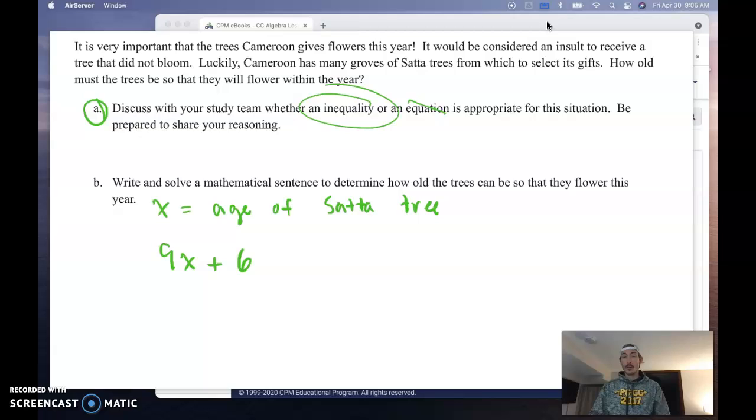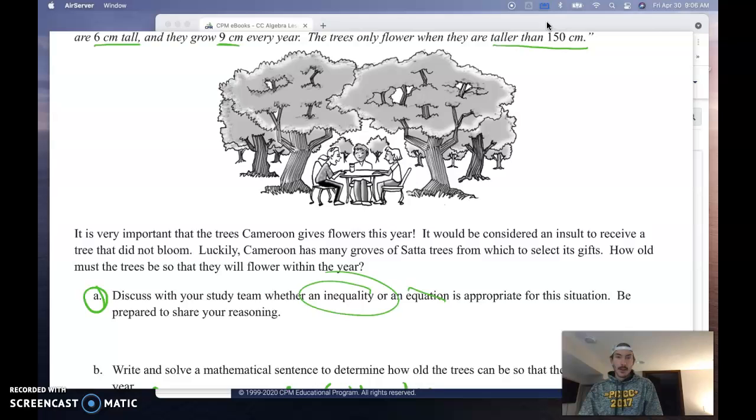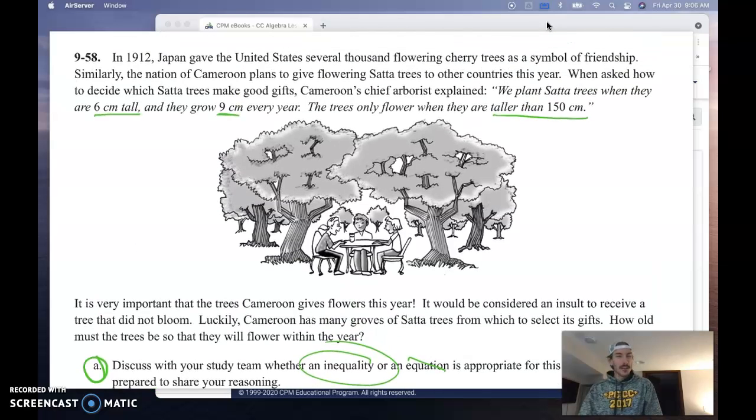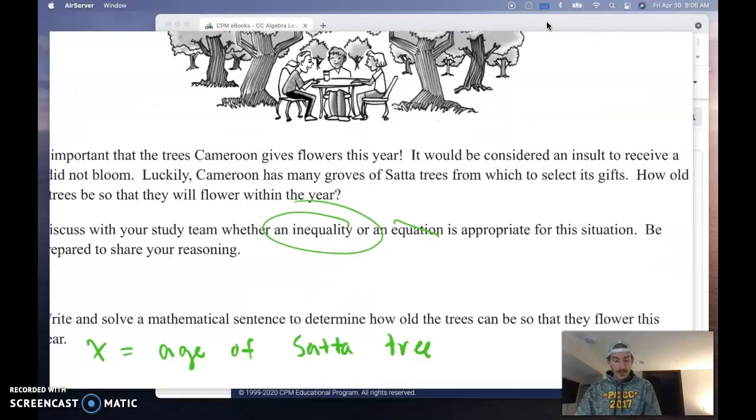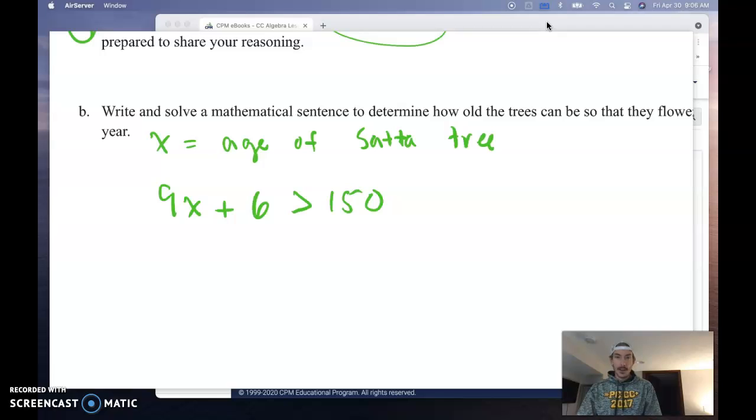And we want that to be taller than 150. So I know 150 is going to be over here on the other side of my inequality symbol. But what does taller than mean? Here's where context is going to help me really identify what kind of symbol I need. Taller than means greater than. But does it imply 150 is a solution or could be a solution? And here it does not. Here it just says taller than. So I know 150 cannot be a solution. So I'm going to leave this as simply a greater than inequality.